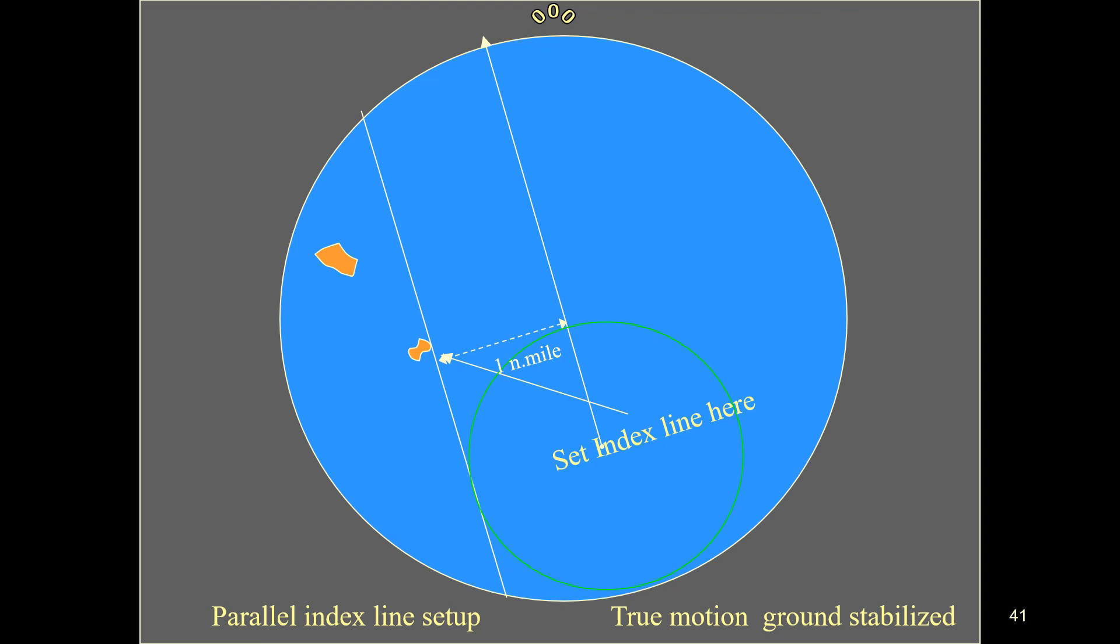A line should be drawn from the echo of the fixed object tangential to the variable range marker circle set to the desired passing distance.